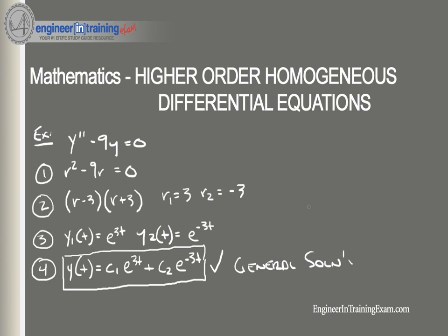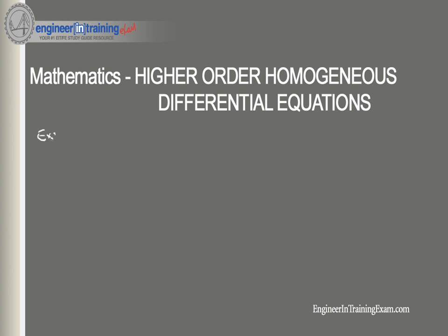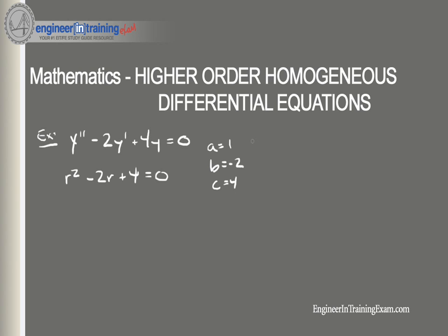Let's look at one more example. Given the equation y'' minus 2y' plus 4y equals zero, we're asked to determine the general solution. Step one: put it in characteristic form — r² minus 2r plus 4 equals zero. Step two: solve for r using the quadratic equation. Running this through the quadratic equation, we find two complex roots: r1 equals 1 minus j·√3 and r2 equals 1 plus j·√3.